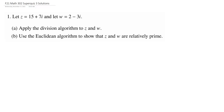This first problem, we are looking at two Gaussian integers. Remember that the Gaussian integers are the ring Z[i], so all things of the form A plus Bi, where A and B are integers. And what we would like to do is, given these two Gaussian integers Z and W, we would like to first apply the division algorithm to these things.